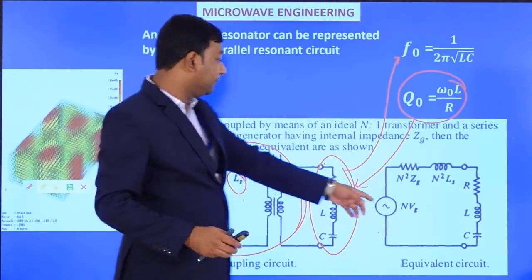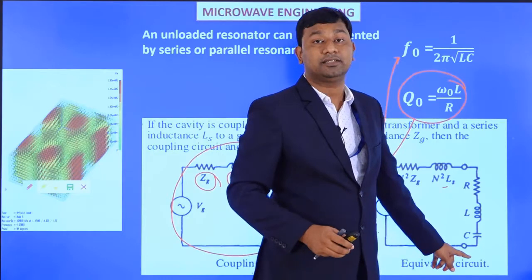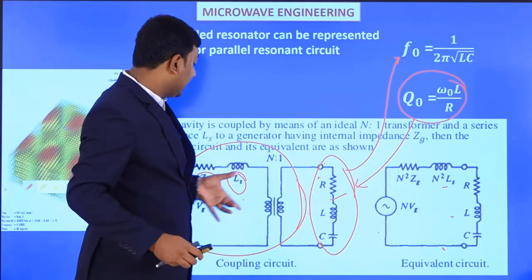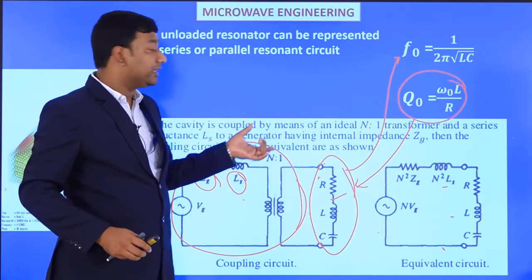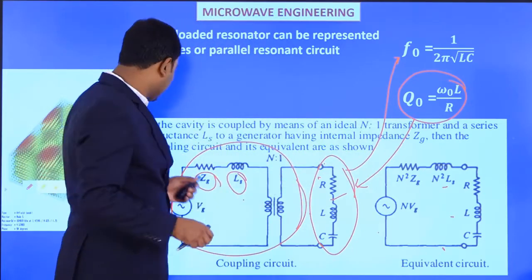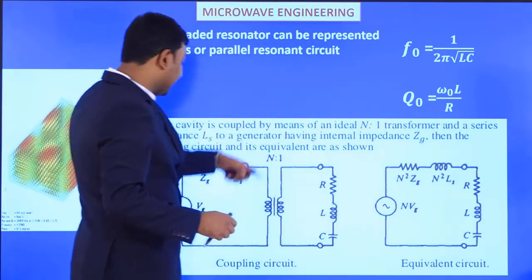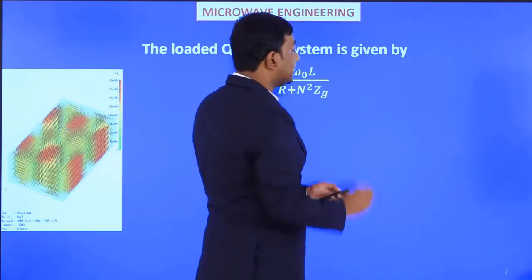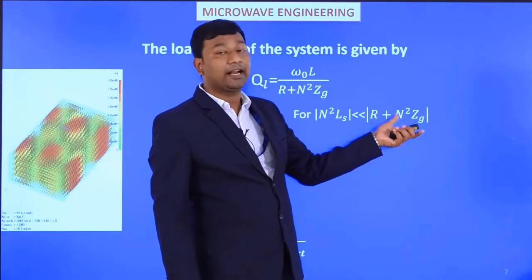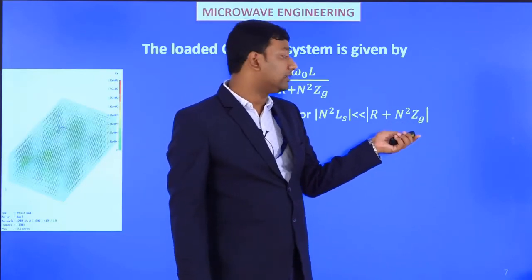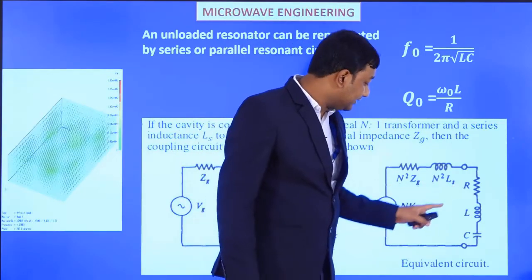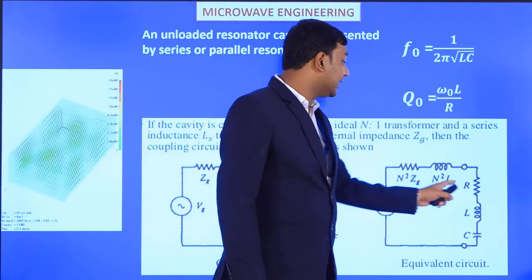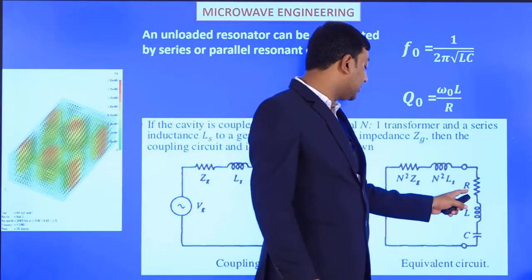Looking at the equivalent circuit: it becomes N²Z_g, N²L_s, and R, L, C in series. So that is the coupling circuit and its equivalent circuit. The unloaded resonator is now coupled via a transformer with turns ratio N:1. The loaded quality factor becomes Q_L = ω₀L / (R + N²Z_g), with the condition that N²L_s must be much less than R + N²Z_g.